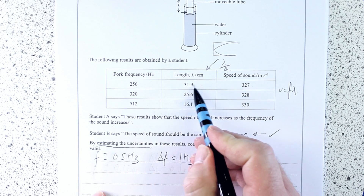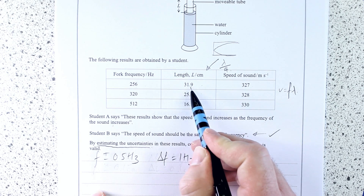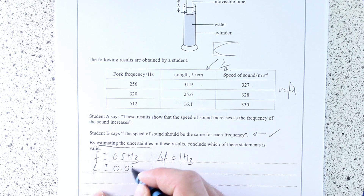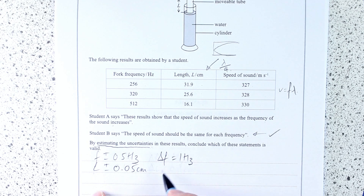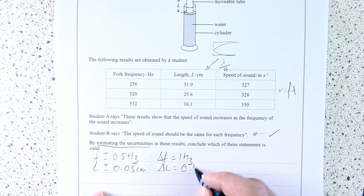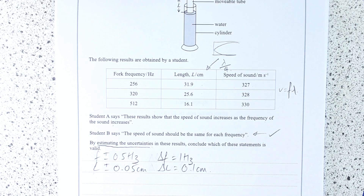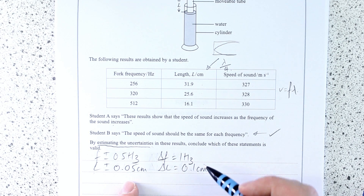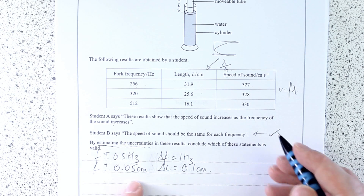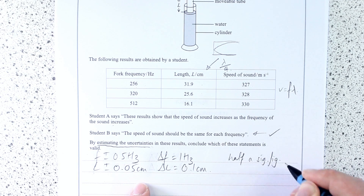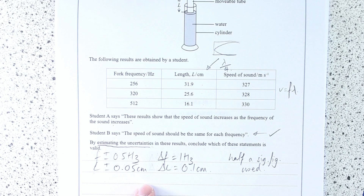Similarly, with the length, this could be as high as 0.95 or as low as 0.85, so in our length we're plus or minus 0.05 centimetres. We don't need to convert into metres here, because we just need to work out a percentage uncertainty. So delta L is clearly 0.1 centimetres — this is a sensible estimate of the uncertainty. If you are not sure whether you're doing the right estimation, justify it: write down something like 'half a sig fig used' or 'half a scale division used'.